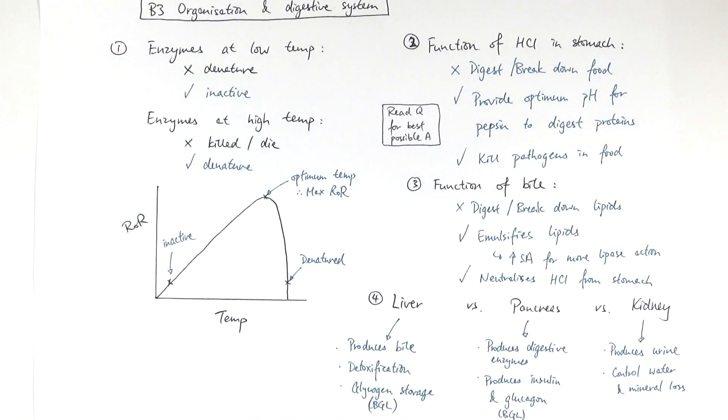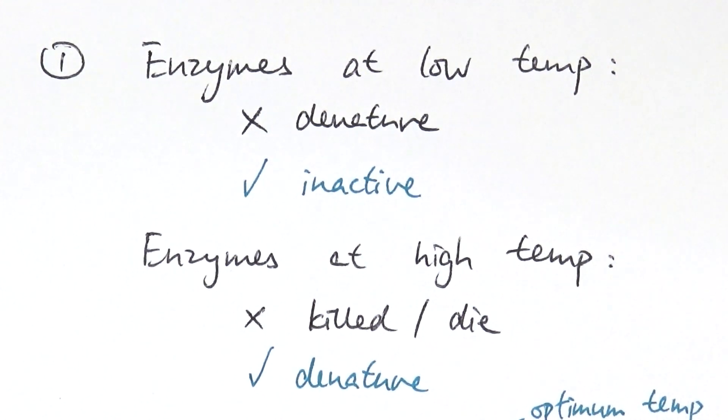In this video I'll be looking at the misconceptions or mistakes usually made by students in B3 about organization and digestive system. First of all, it's about describing the state of enzymes in different temperatures.